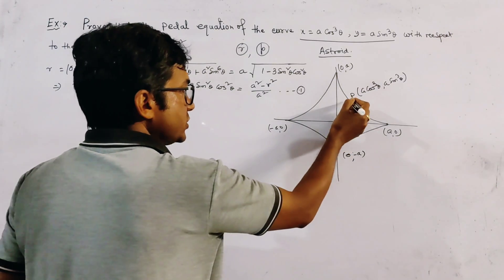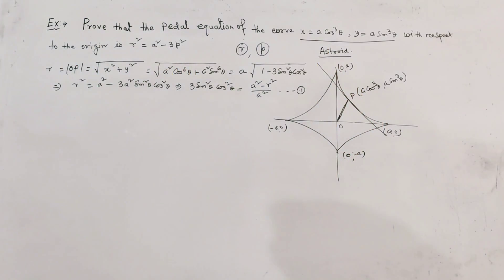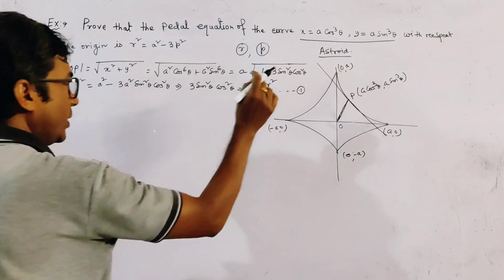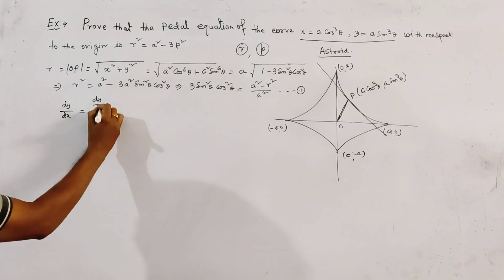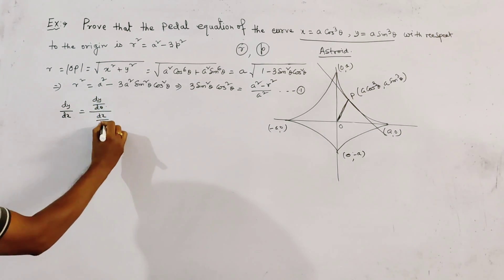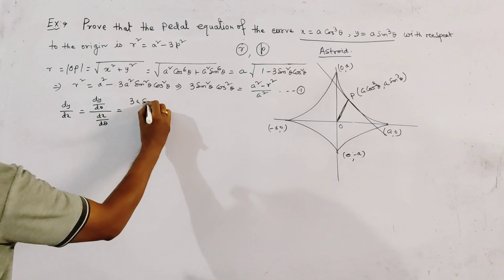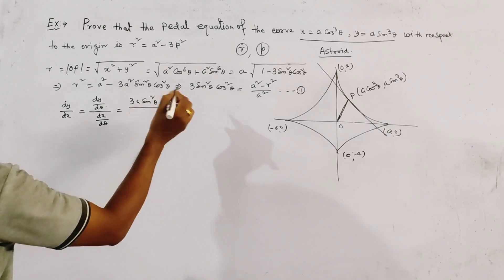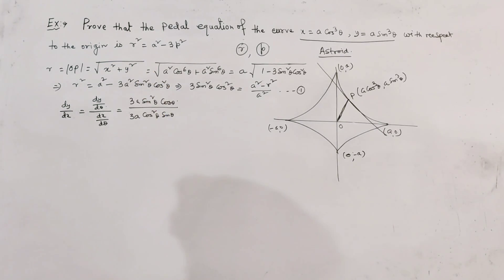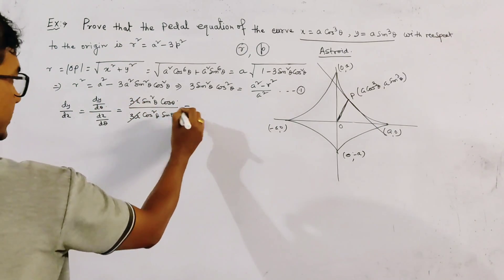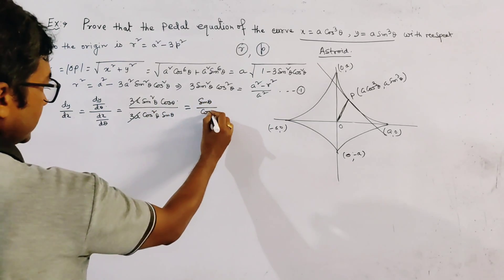Now we have to find the equation of the tangent at that point on the asteroid. To find the tangent, we first find dy/dx, which equals (dy/dθ) / (dx/dθ). This gives dy/dθ = 3a·sin²θ·cosθ, and dx/dθ = −3a·cos²θ·sinθ. After cancelling 3a, sinθ, and cosθ terms, we get dy/dx = −sinθ / cosθ.